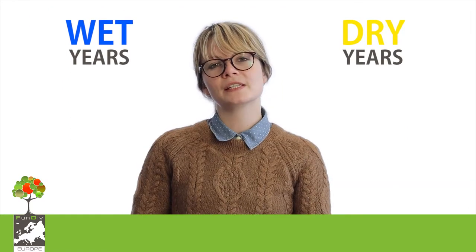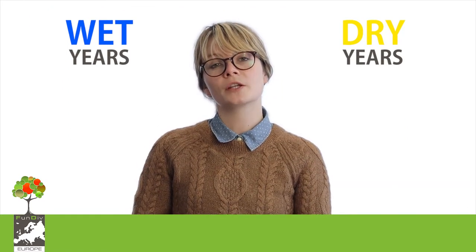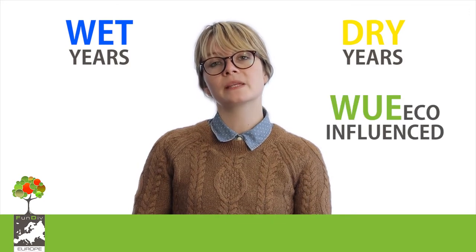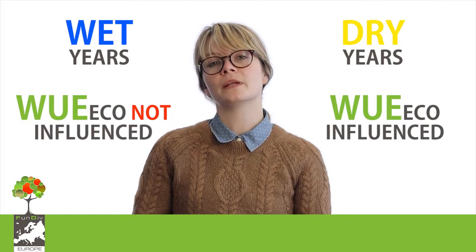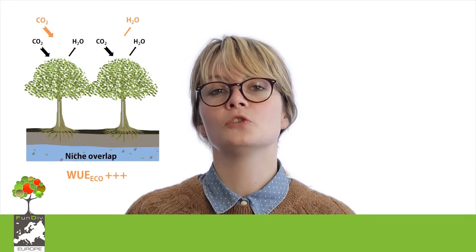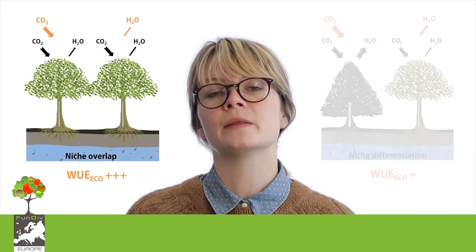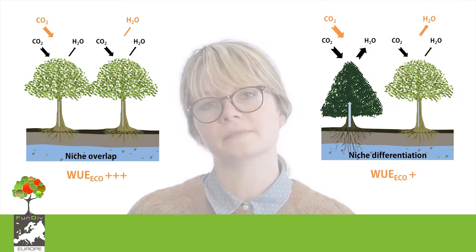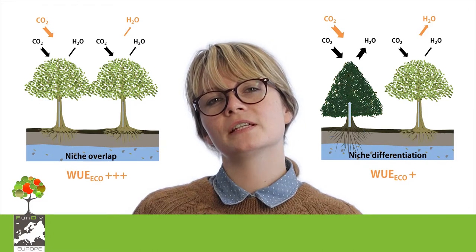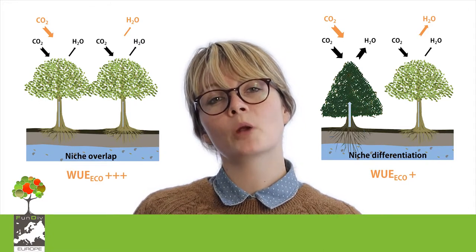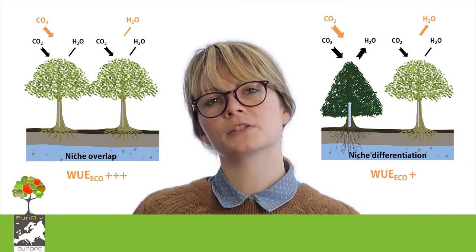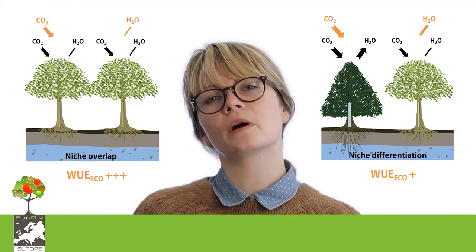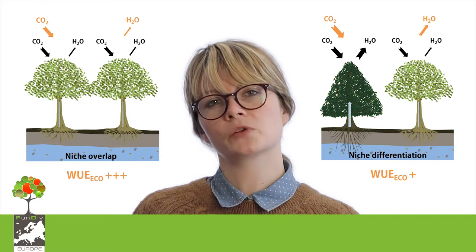We showed that tree diversity influences ecosystem water use efficiency during dry years, but this effect was not shown during wet years. We report that for a majority of forest types in Europe, the increase of water use efficiency due to drought is actually much more important in less diverse forest stands than in more diverse forest stands. This beneficial effect of tree diversity on the carbon and water cycle is probably due to a complementary use of soil water, as rooting systems of different species occupy different layers of the soil.